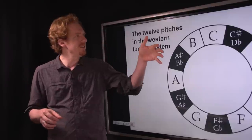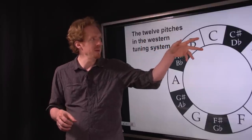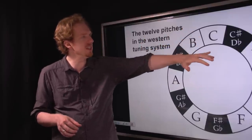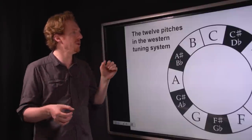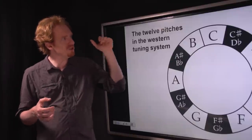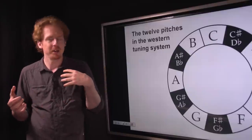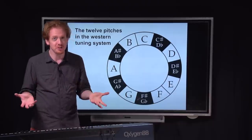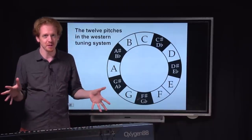A little bit about this sharps and flats business. C sharp and D flat are two different names for the same thing — the black key in between C and D. Back in musical history, there was actually a meaningful difference between C sharp and D flat; they were actually different notes. But in the modern tuning system that everybody uses, they are the same note, just two different names for the same thing.